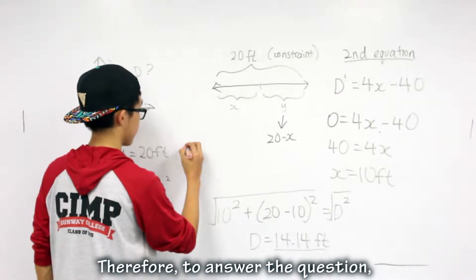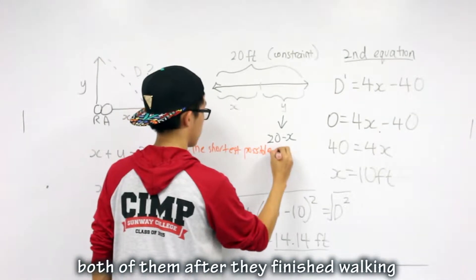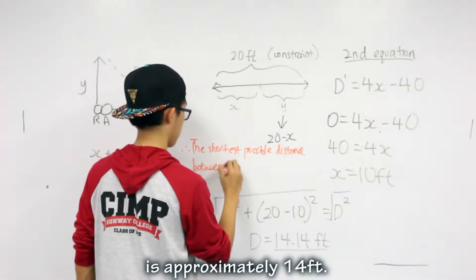Therefore, to answer the question, the shortest possible distance between both of them after they finish walking is approximately 14 feet.